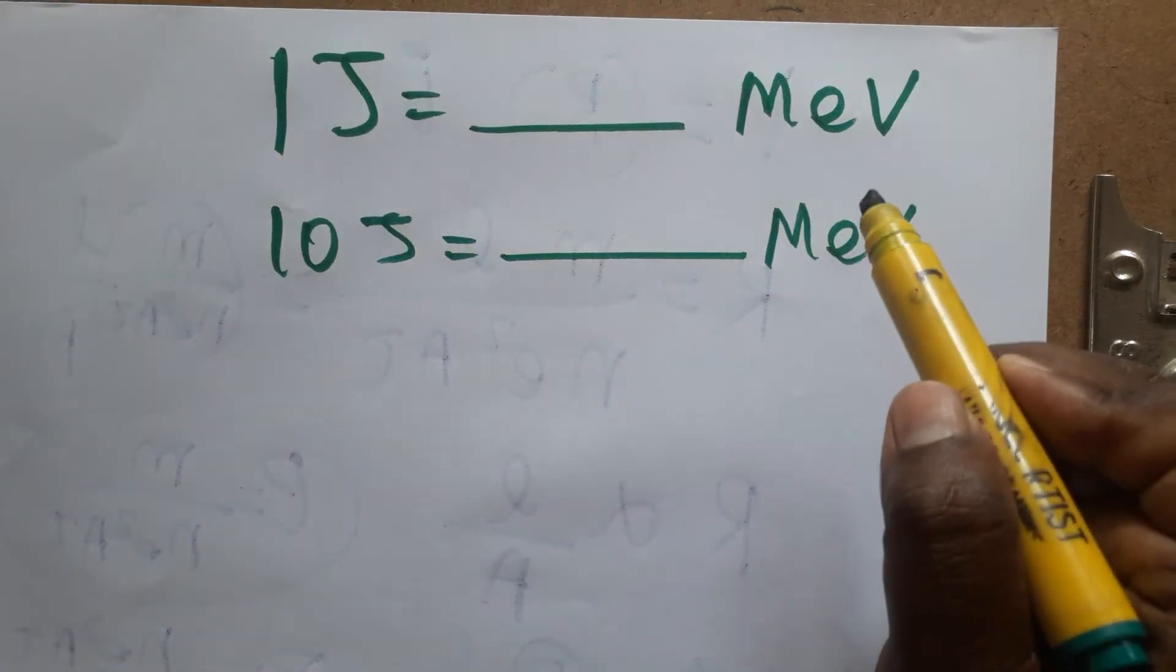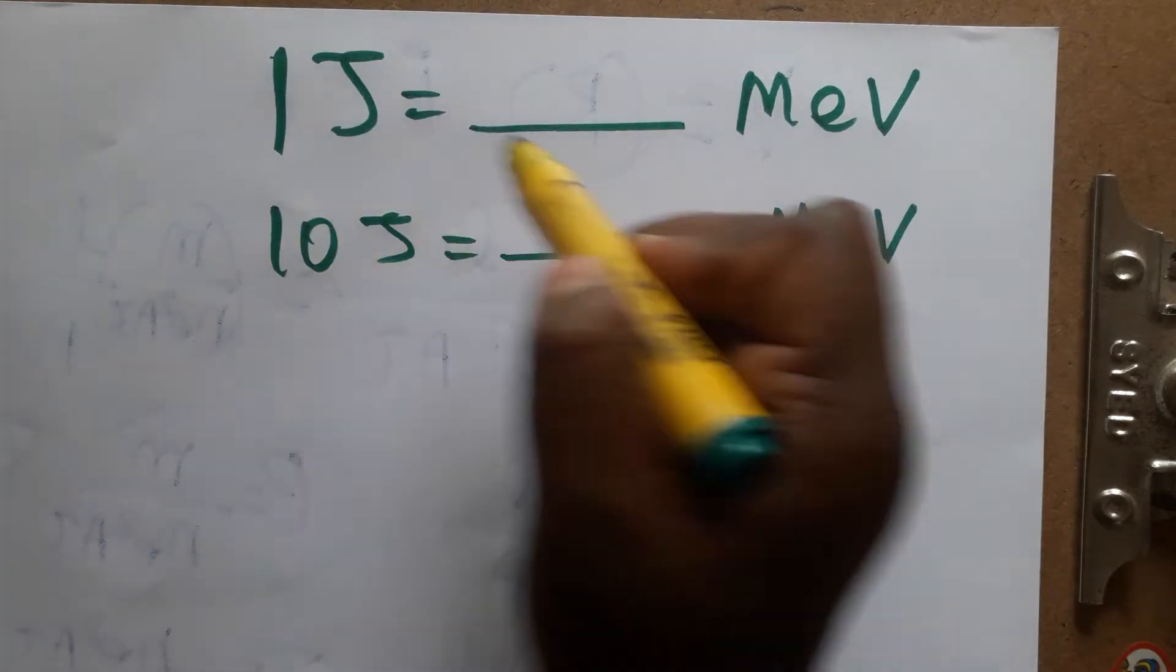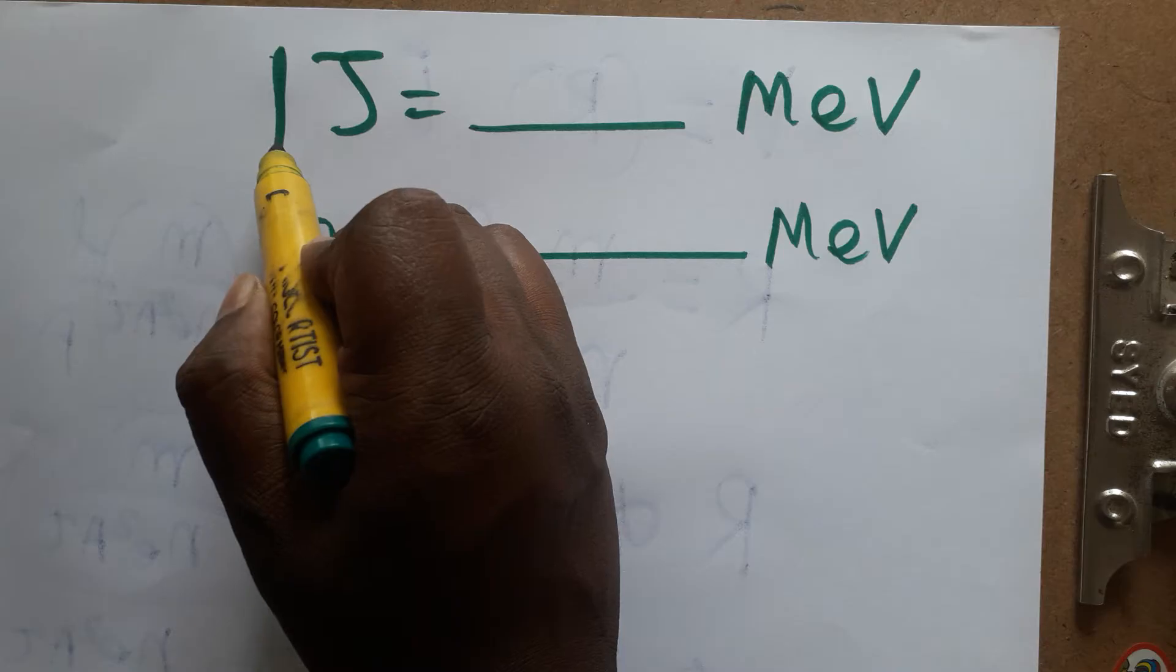Today we are going to see one joule is equal to dash MeV, one 10 joule is equal to dash MeV. It's a one example problem. First we learn one joule is equal to dash MeV.